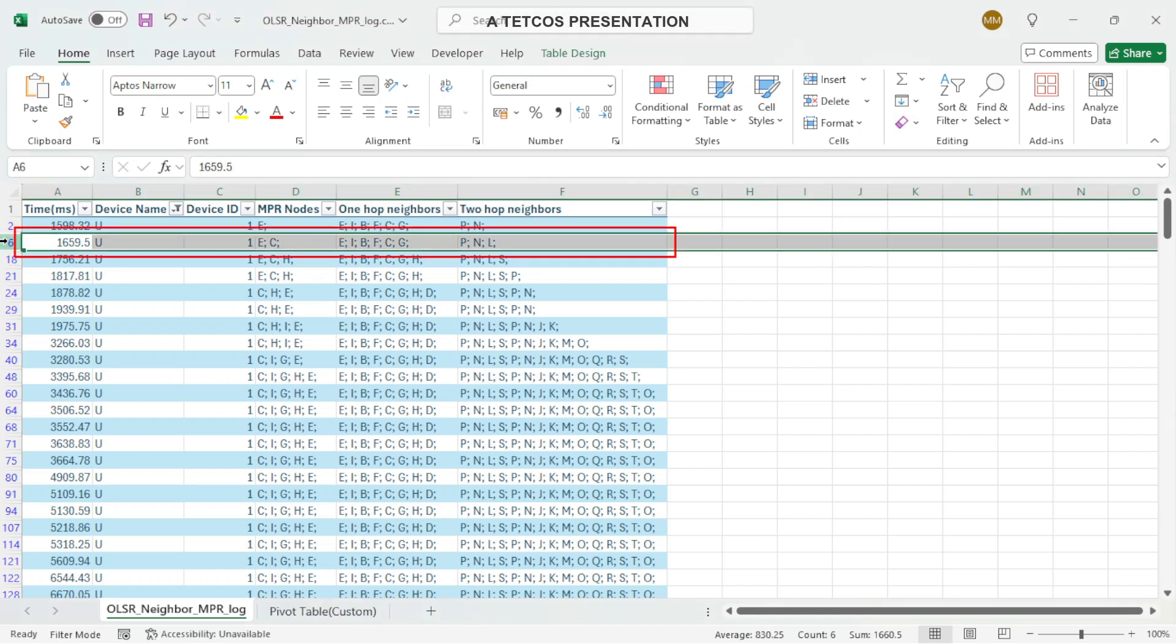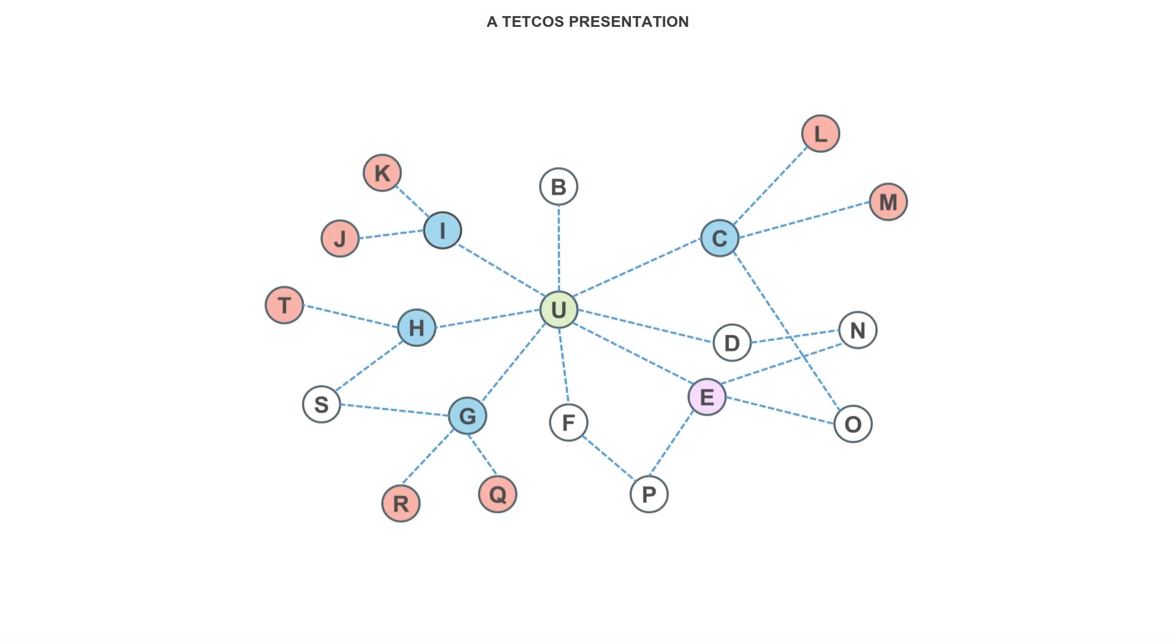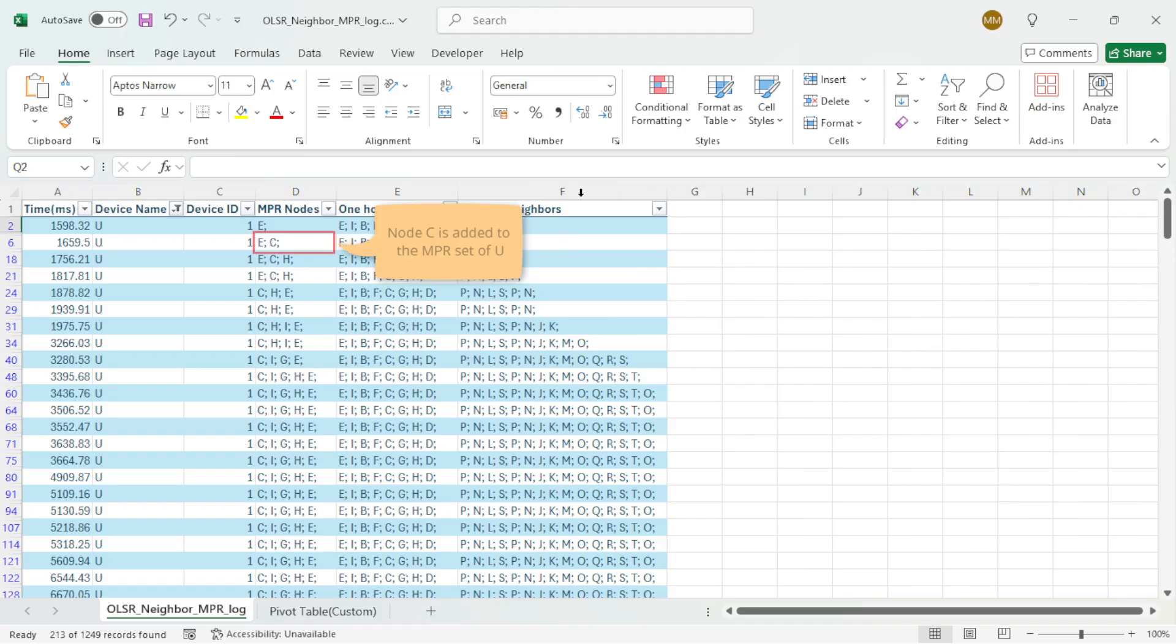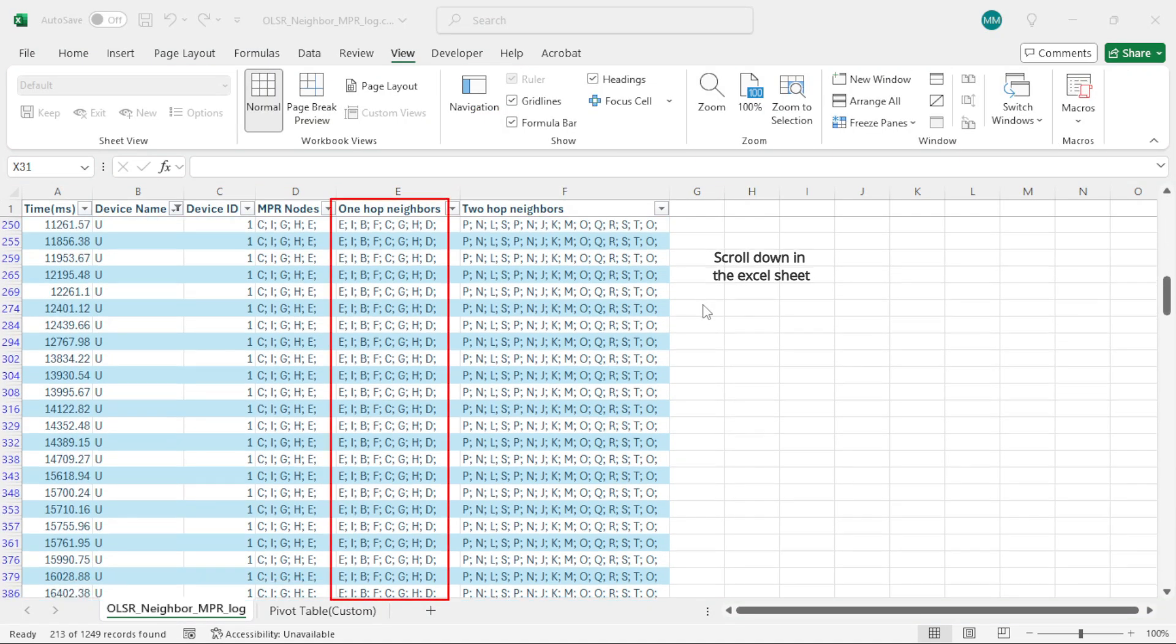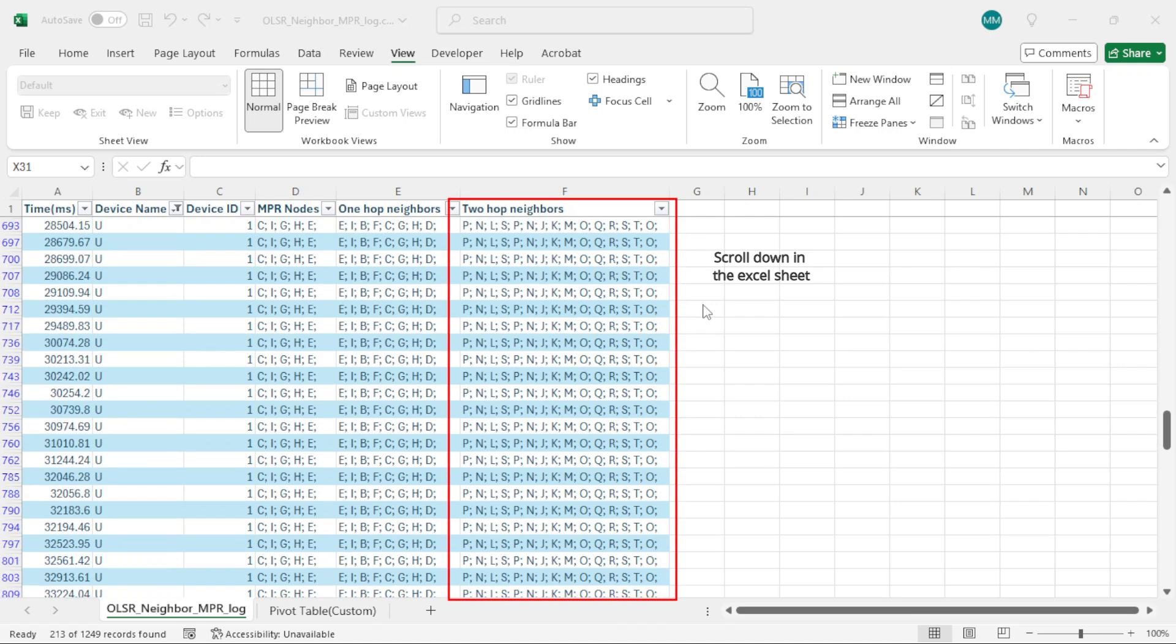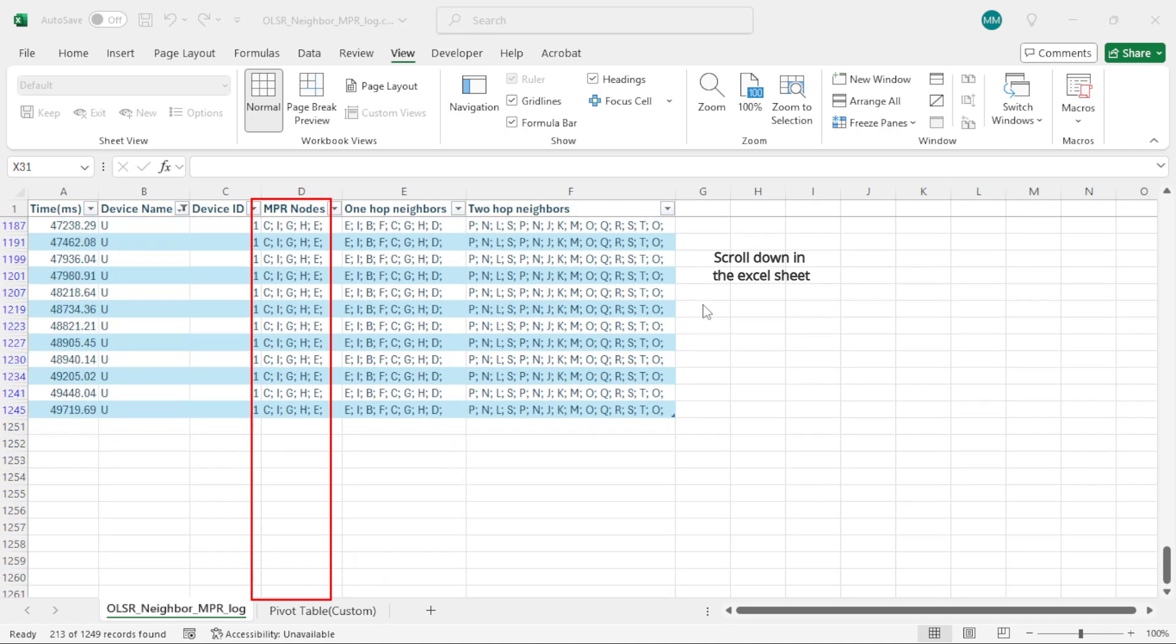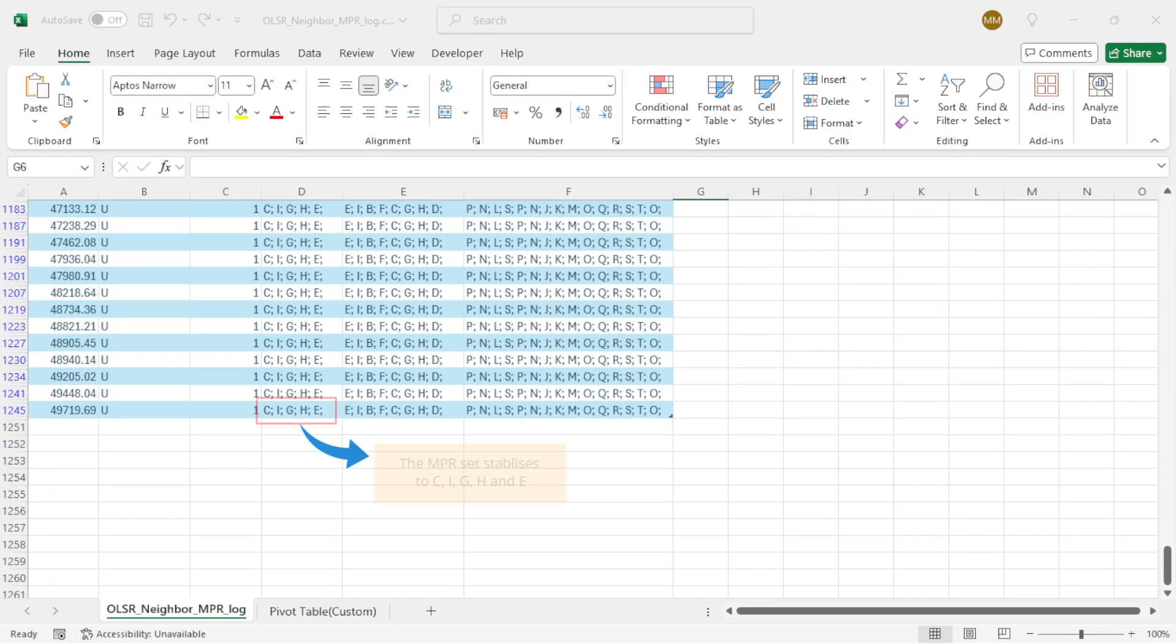After the second iteration, the 2 hop neighbor set consists of P, N, and L. The one node through which U can reach P and N is E, and the only node through which U can reach node L is node C. Therefore, node C is added to the MPR set. This can be seen in the log file. As we scroll down further, we observe the 1 hop neighbor set, 2 hop neighbor set, and MPR set getting updated over time. Eventually, the MPR set stabilizes and includes C, I, G, H, and E.